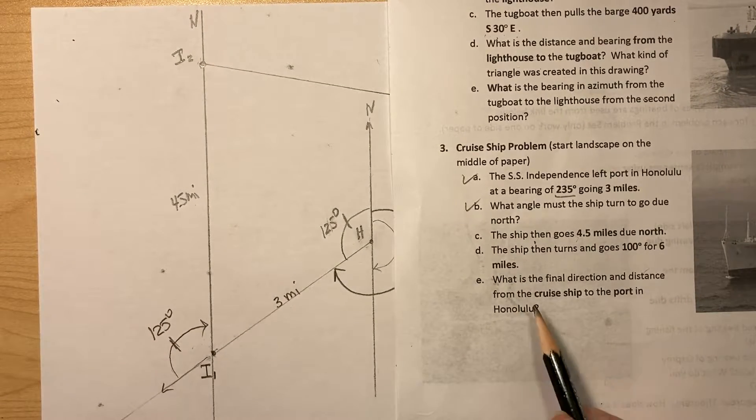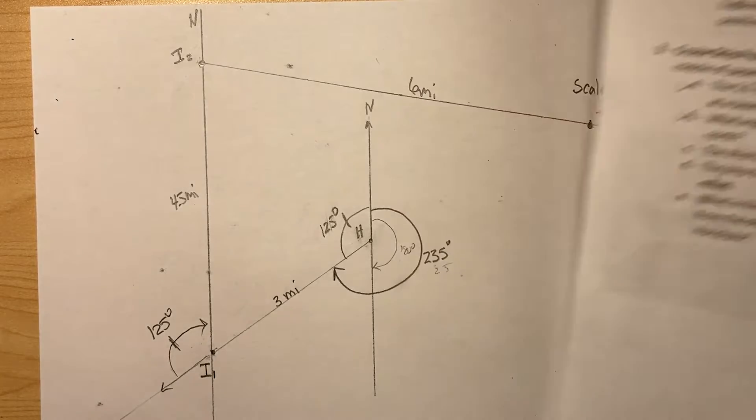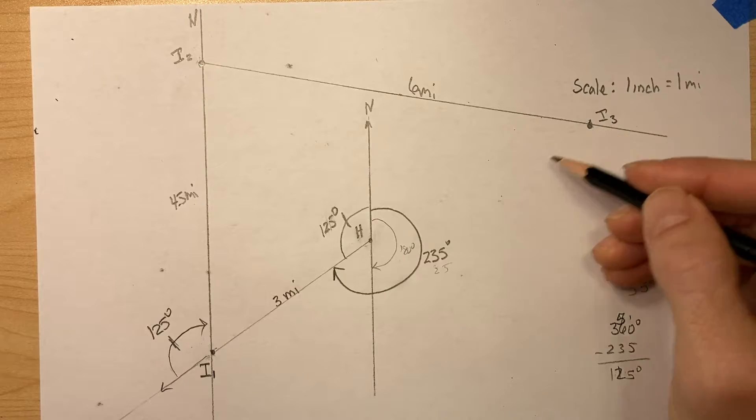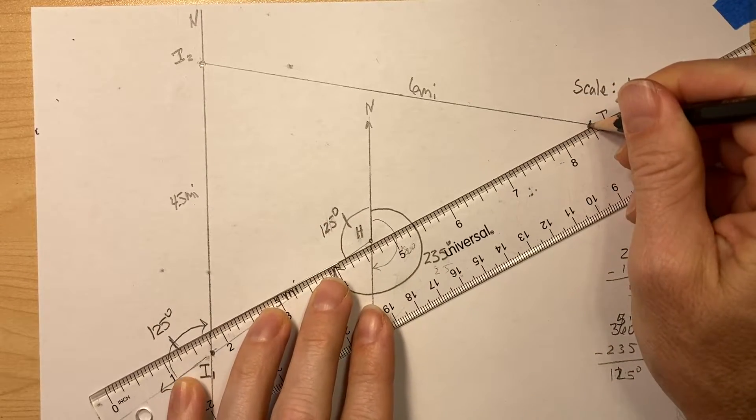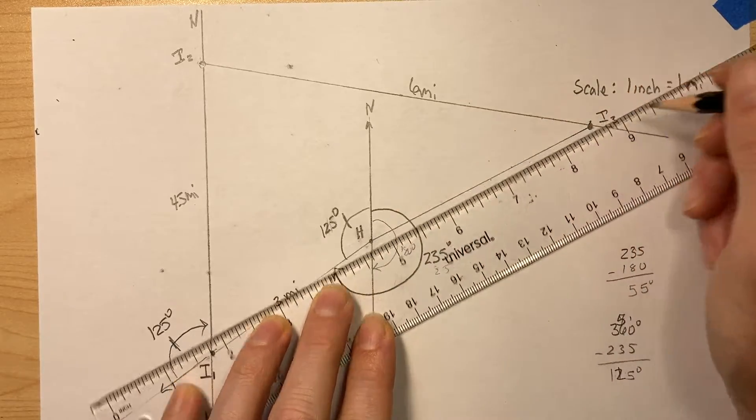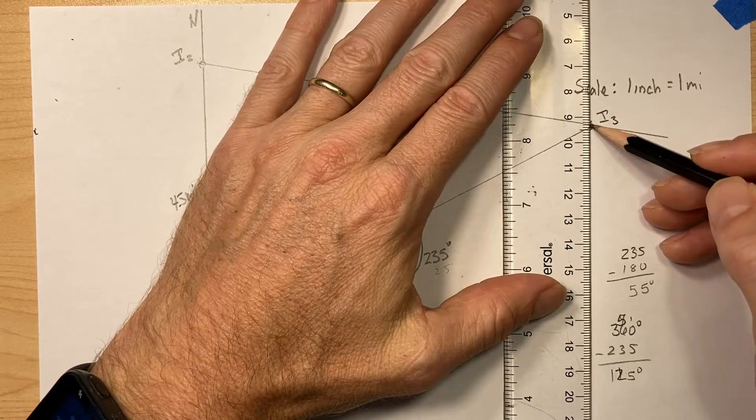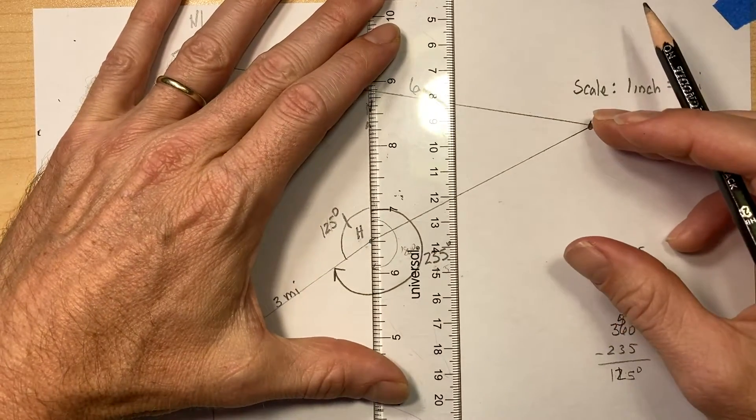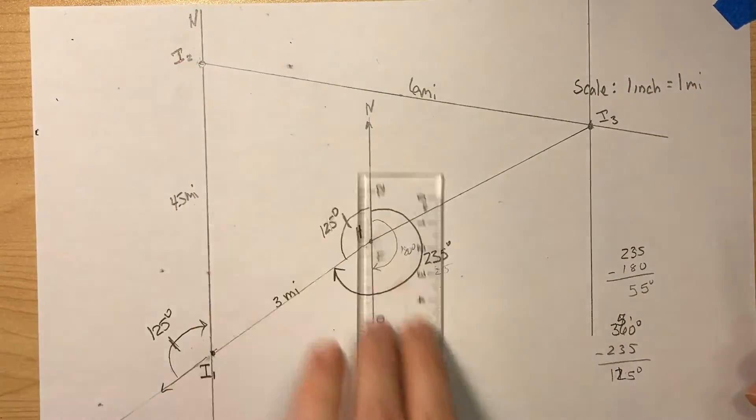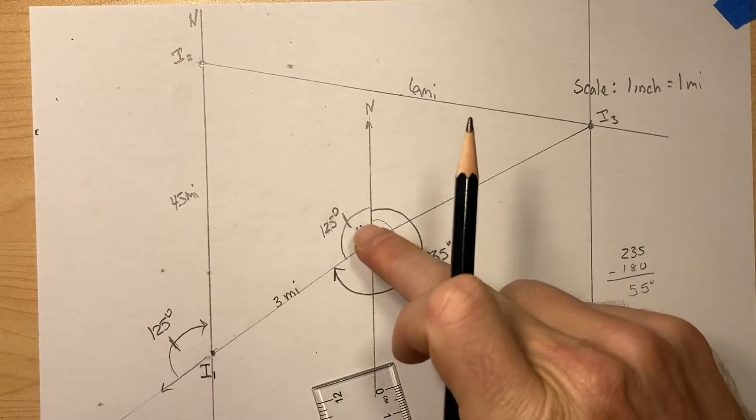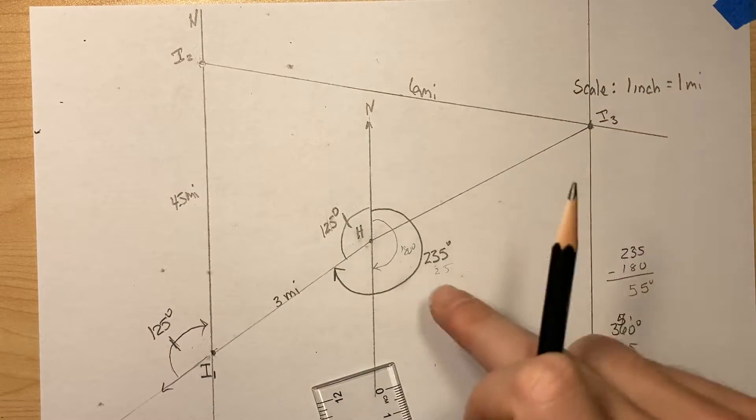What is the final direction and distance from the cruise ship to the port in Honolulu? Okay. So from the cruise ship to the port, so we need to find this distance and we need to get the direction. So we always, at each step of the way, we need to make north-south lines at each step. So yeah, I did it from the starting point, second point, third point, and the fourth point.